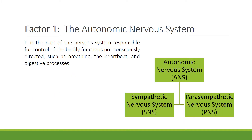The autonomic nervous system has control over unconscious processes like the heartbeat, breathing, and digestive processes. The ANS is divided into the sympathetic nervous system (SNS) and the parasympathetic nervous system (PNS).